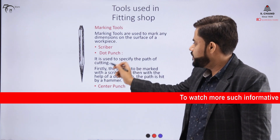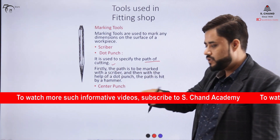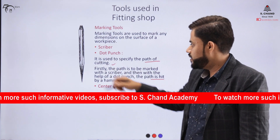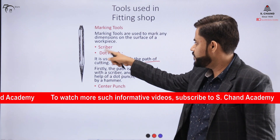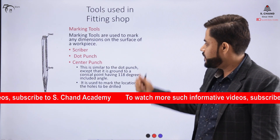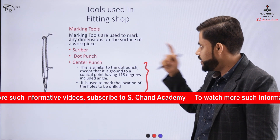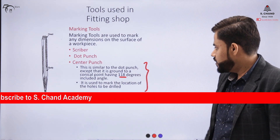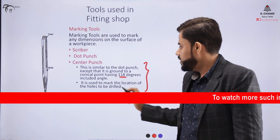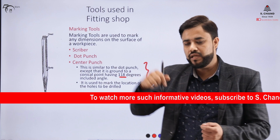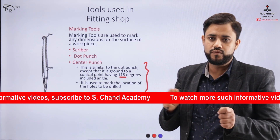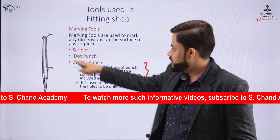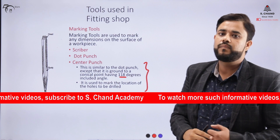The dot punch is used to specify the path of cutting. First, the marking is done with the scriber, and then the path is made by hammering the dot punch into the surface. The center punch is somewhat similar to the dot punch, but the key difference is it has a conical end with a cone angle of 118 degrees. It is used to mark the locations of drilled holes — the center punch is used first to create a base so the drill goes precisely into the correct position, and then the drilling operation is carried out.